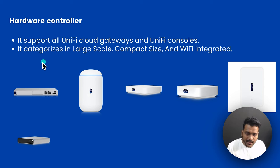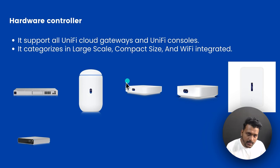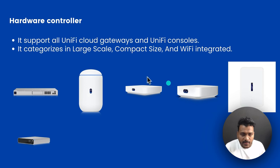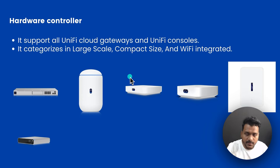These hardware controllers are categorized by large-scale, compact size, and Wi-Fi integrated. For large scale you can get UDM Pro, UDM SE, and Dream Wall. For compact size you have UniFi Express and Cloud Gateway Ultra. The UDR and Wi-Fi integrated models are also categorized as UniFi hardware controller gateways.